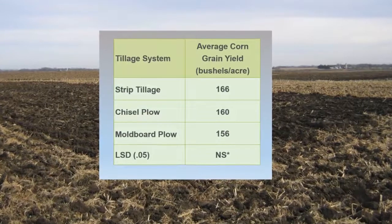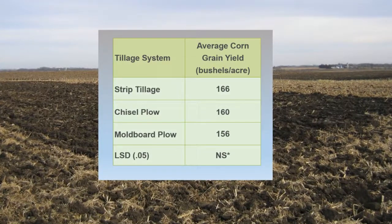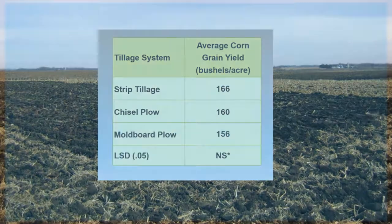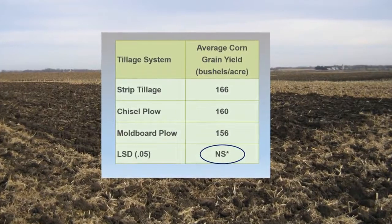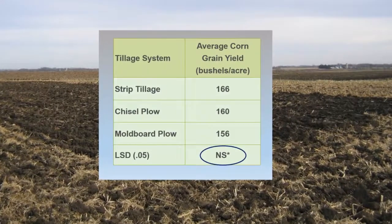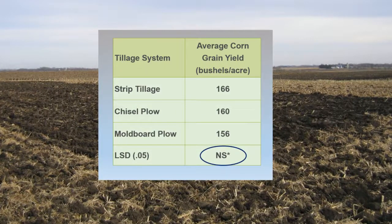Results from a University of Minnesota tillage trial demonstrate the importance of statistical analysis in helping determine if a yield difference is likely real. At this particular site, average corn yield for strip tillage was 10 bushels per acre greater than moldboard plow. Yield was not statistically significant, however, so we couldn't say one tillage system resulted in a higher yield than another. This is noted by the NS for not significant in the table.